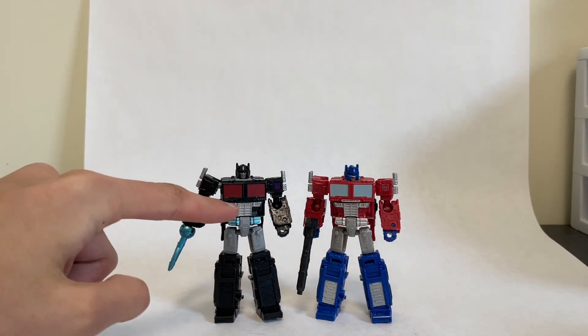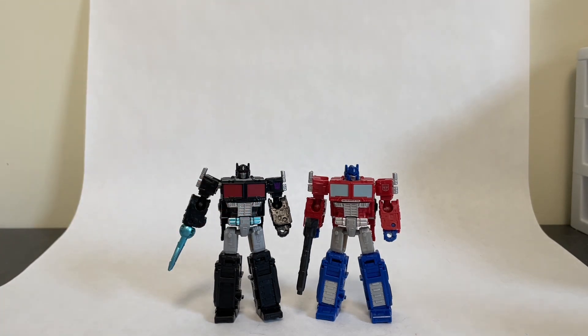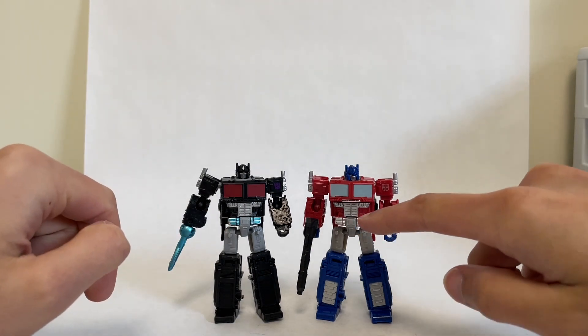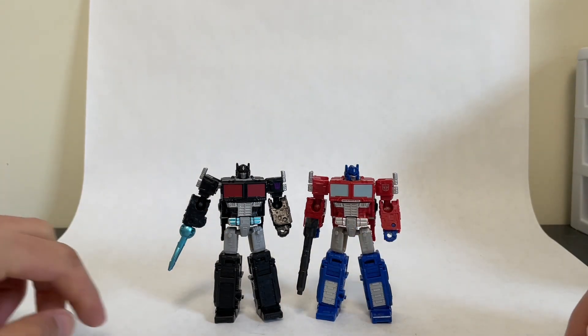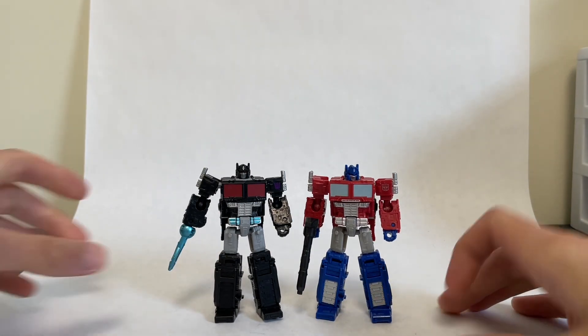So you'll notice that Nemesis does not have the little silver part of the grill painted on him. Whereas Optimus doesn't have like any yellow, or Nemesis has that blue paint on the waist. Optimus does not have any of that. And then Optimus has the silver on the legs, whereas Nemesis does not.